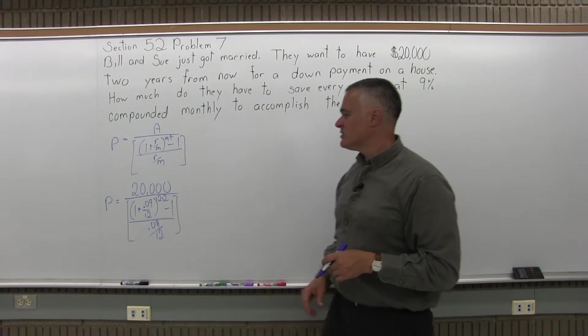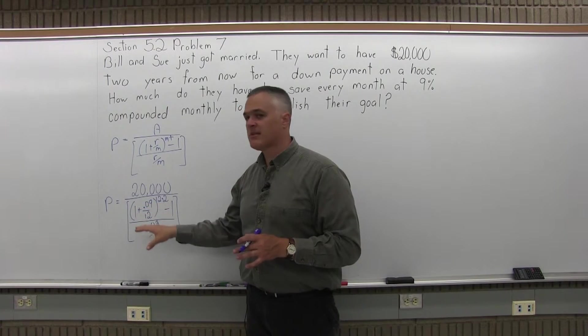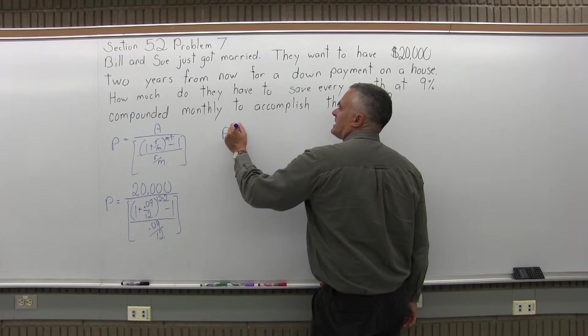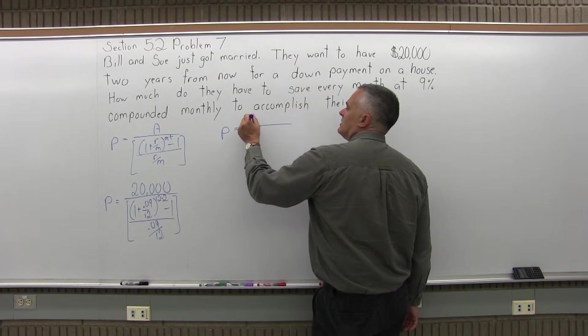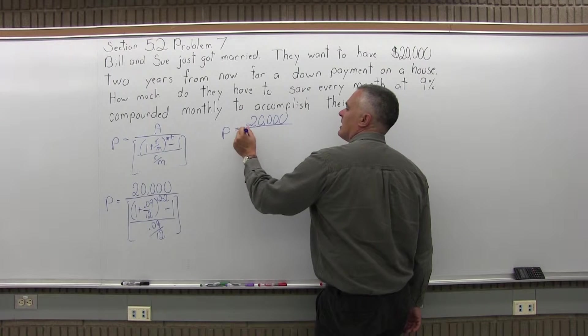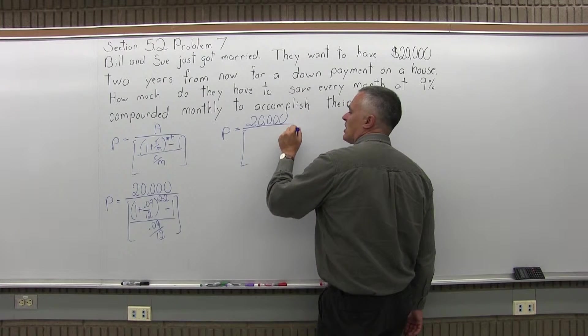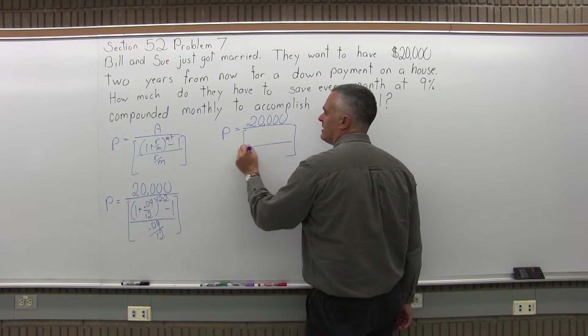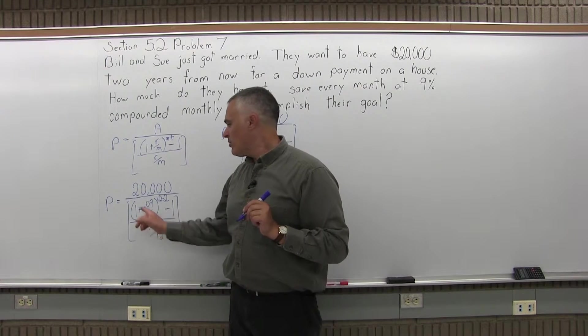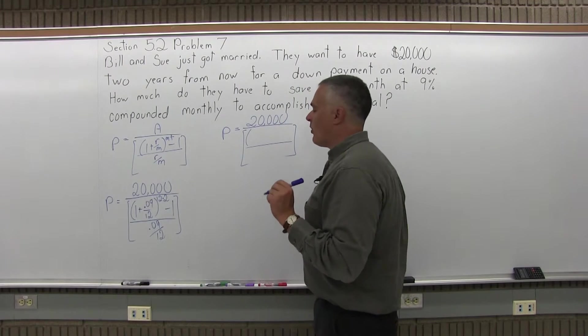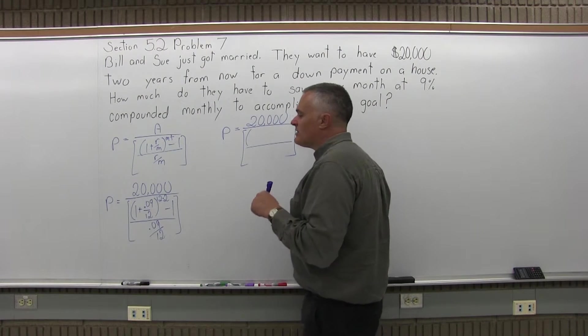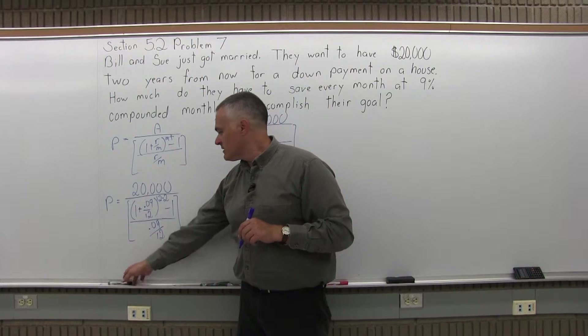And now we start some of the computation. As usual, when you have parentheses in any type of math, you need to deal with the parentheses first. So, as I do that, P equals, we have a fraction with 20,000 on top of the fraction. Under the 20,000 in the denominator, you have brackets that form yet another fraction. And in the top of the brackets, the numerator of the brackets, we have 1 plus .09 over 12. .09 over 12 has come up a few times before. It's .0075.